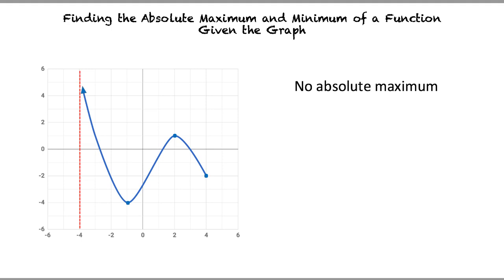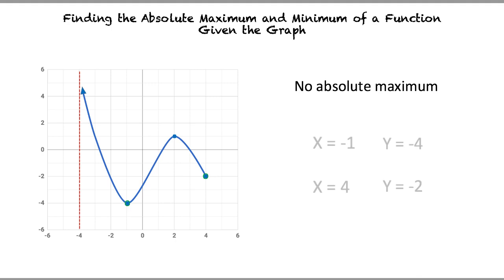Now let's find the absolute minimum. There is a low peak at x equals negative 1 and an endpoint at x equals 4. The y-values for these points are y equals negative 4 at x equals negative 1, and y equals negative 2 at x equals 4. The lowest of these values is at y equals negative 4, so the absolute minimum is at x equals negative 1.